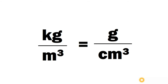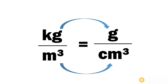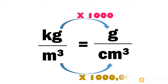To do this, we have to convert kilogram to gram as well as meter cube to centimeter cube. To convert kilogram to gram, we multiply the value in kilogram by one thousand, because one kilogram is equal to one thousand grams. When it comes to meter cube, the values are in cubic meters, which means we have to multiply the meter cube by ten lakh to convert it into centimeter cube.